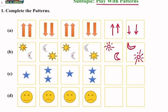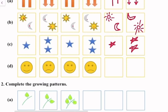In pattern C, we see one star, then two, one, two, one, and two.